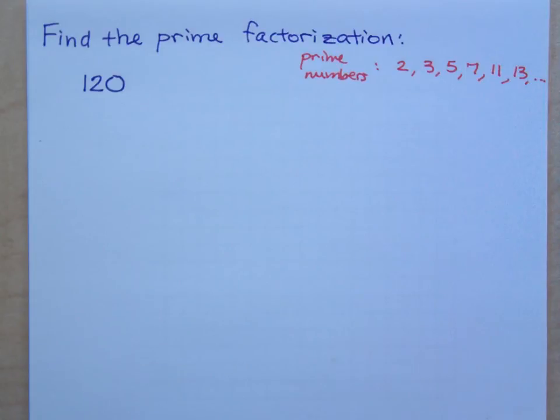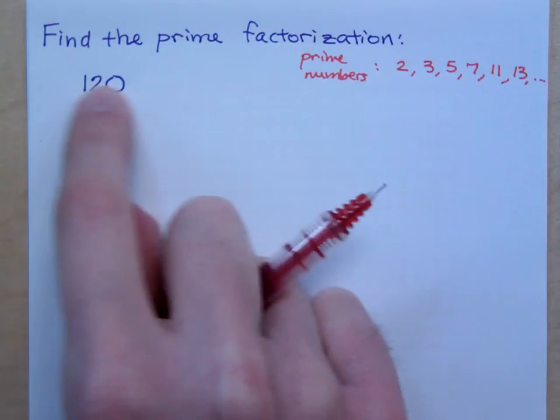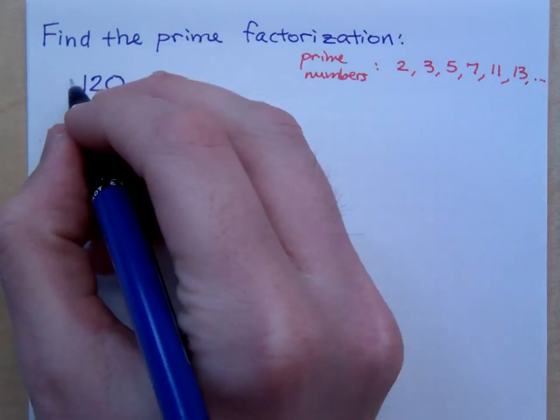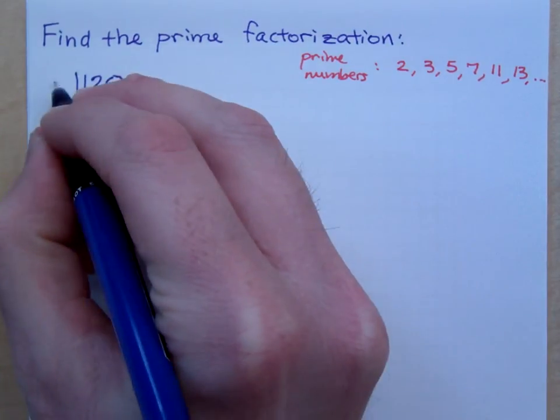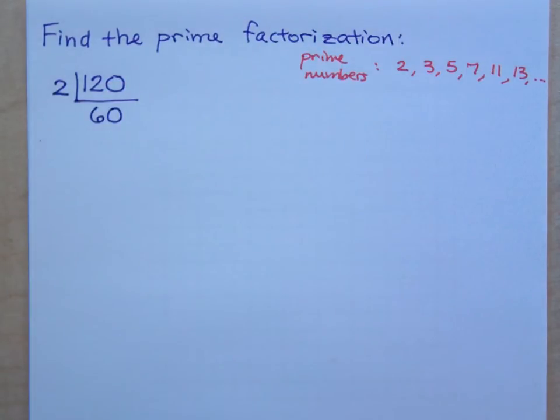So, one way to go about finding a prime factorization is to do it systematically. You don't need to bounce around. Start with the first prime number that we have here, 2. And see, does 2 go into 120? Does 2 go into 120 evenly? How many times does 2 go into 120? So, 2 goes into 120 60 times. We're kind of doing this upside down, but just trust me on this.